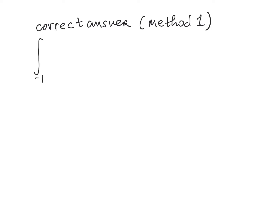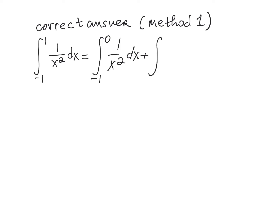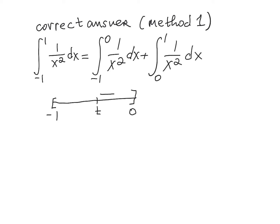Here is the correct solution. Method 1: the integral from minus 1 to 1 of 1 over x squared — knowing the function is undefined at 0 — we write it as the integral from minus 1 to 0 of 1 over x squared, plus the integral from 0 to 1 of 1 over x squared. Both are improper integrals. If one of those diverges, the whole thing diverges. For the first interval, from minus 1 to 0, let t be any number between minus 1 and 0.